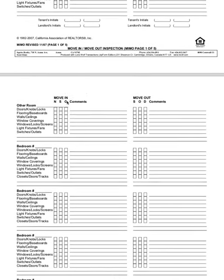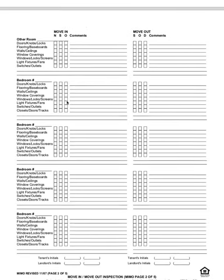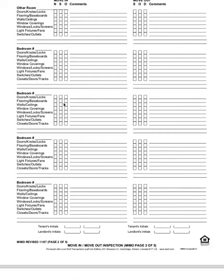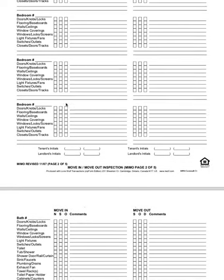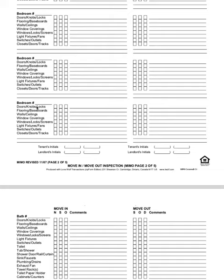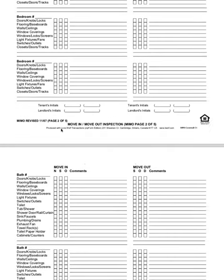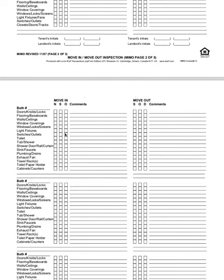If you get to a field — say an extra bedroom or bath that doesn't apply — you can just cross out that section. It doesn't apply to your house.